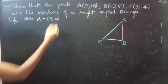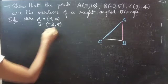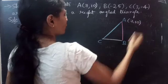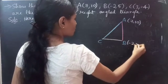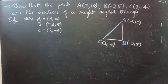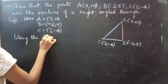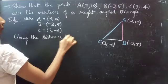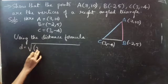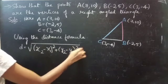Solution: A equals to 7 comma 10, B equals to minus 2 comma 5, and C equals to 3 comma minus 4. Using the distance formula: d equals to square root of (x2 minus x1) whole square plus (y2 minus y1) whole square.